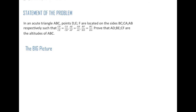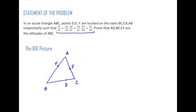Let us look at the statement of this problem. We have an acute angle triangle ABC. It is given that points D, E, F are located on BC, CA, and AB respectively. And the particular relationship given is: CD over CE equals CA over CB, and so on. We will return to this ratio relationship shortly.